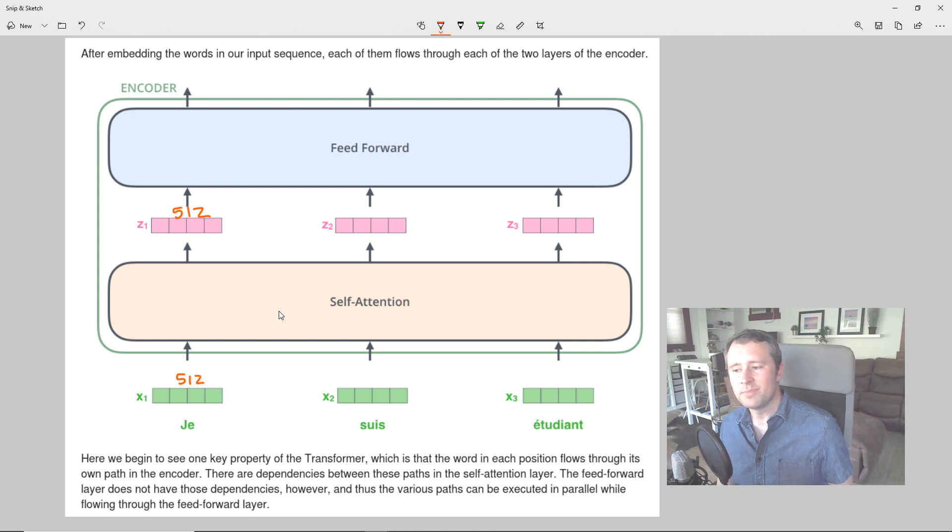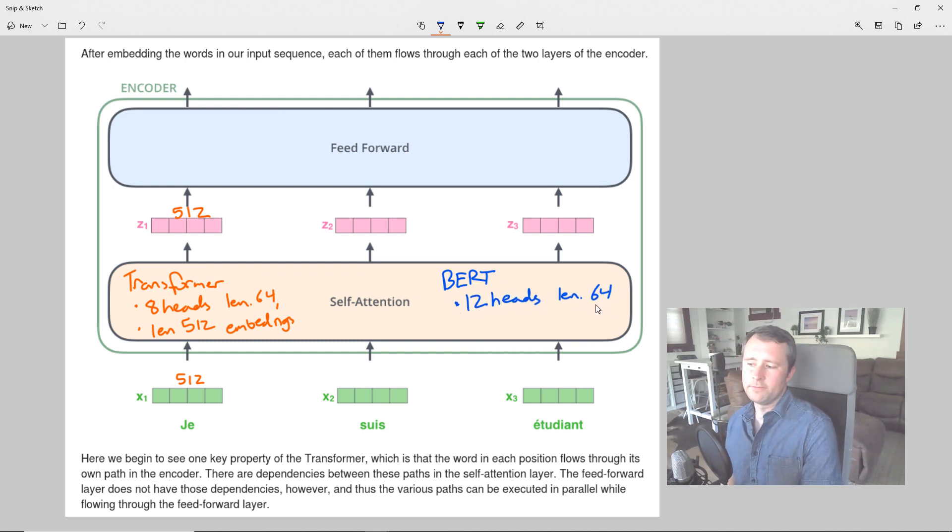So that's about it for multi-headed attention. But the last thing I want to cover here is the difference in dimensions between the original transformer that we're looking at here in Jay's post versus BERT, which is what we're trying to learn more about. So for the transformer, we have eight heads, length 64, and that leads to length 512 embeddings. Now for BERT, we actually have 12 heads, but also length 64. And so what that leads to is length 768 embeddings. So that's 12 times 64.